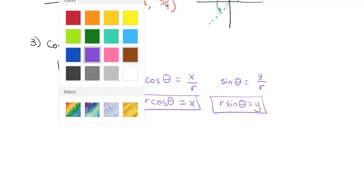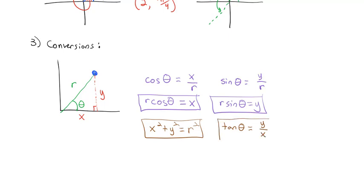We also have ways to convert the other direction. We know from the Pythagorean theorem on this triangle that x squared plus y squared is equal to r squared, so if we know x and y, we can calculate r. Also, if we know x and y, we can use the tangent of theta equal to the opposite over the adjacent, or y over x. So tangent of theta is equal to the ratio of our coordinates. Let's use these conversion properties to convert the point (3, negative 4) to polar coordinates.